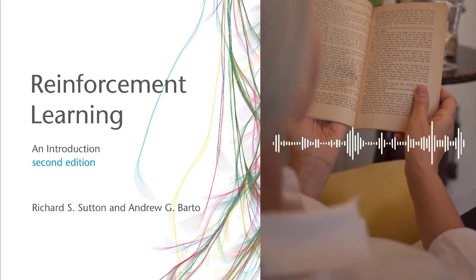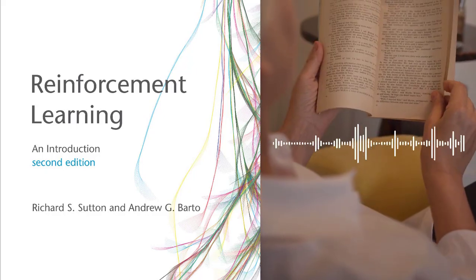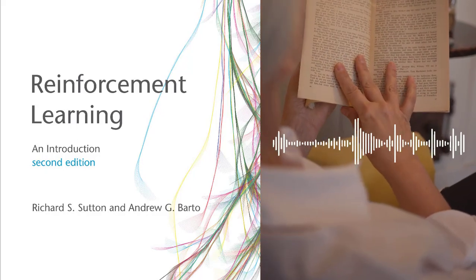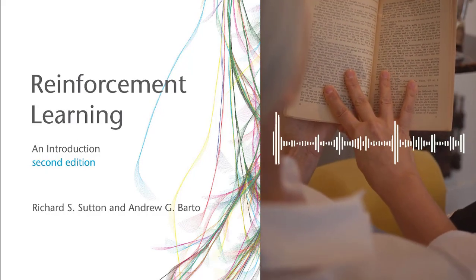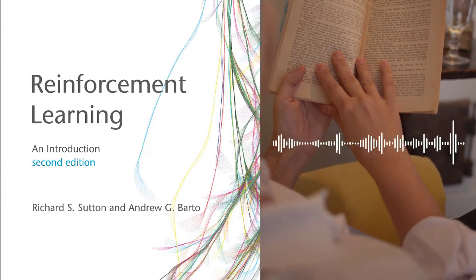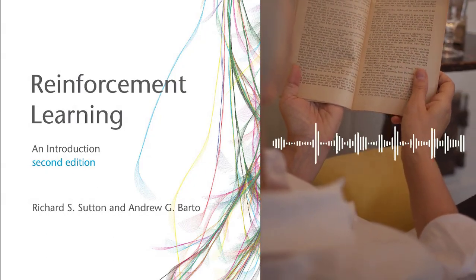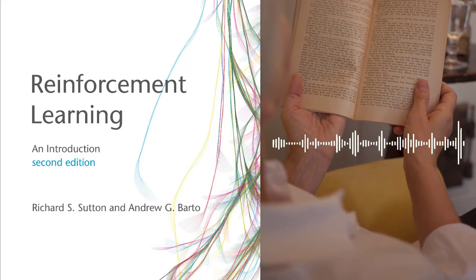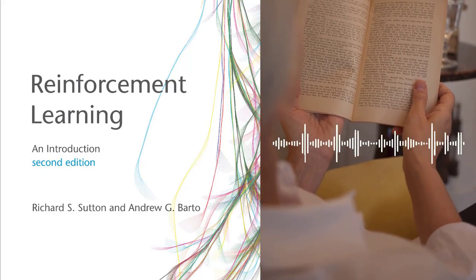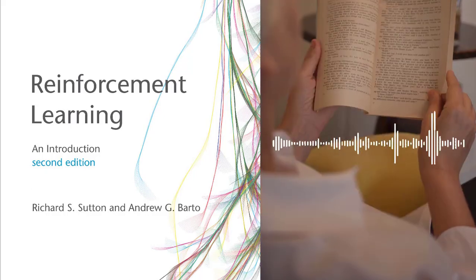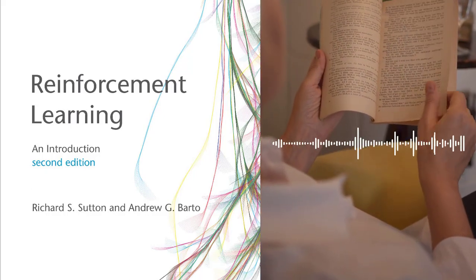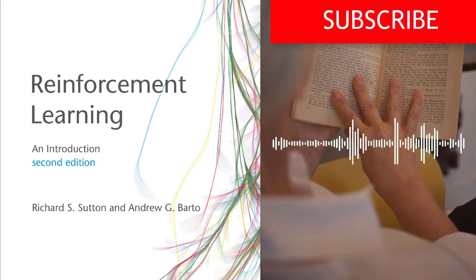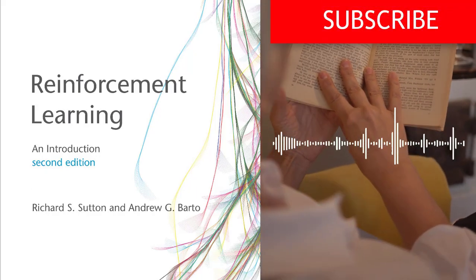Chapter 6 – Temporal Difference Learning: Chapter 6 introduces a third set of reinforcement learning algorithms, known as temporal difference methods. TD methods combine the ideas of dynamic programming and Monte Carlo methods by bootstrapping from the current estimate of the value function. The authors describe the TD(0) algorithm, which is the simplest TD algorithm, as well as the TD-Lambda algorithm, which is a more general TD algorithm.